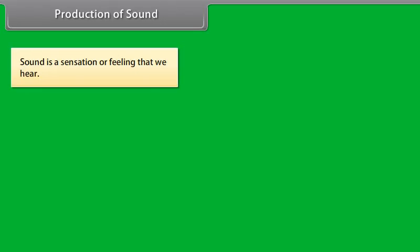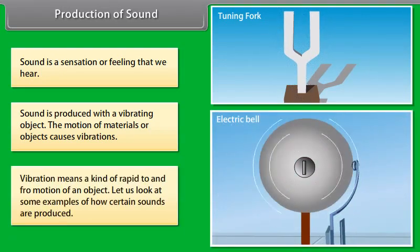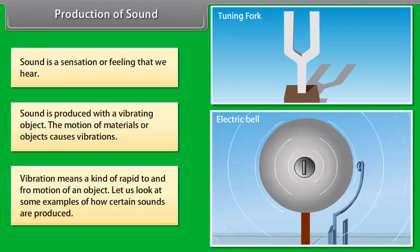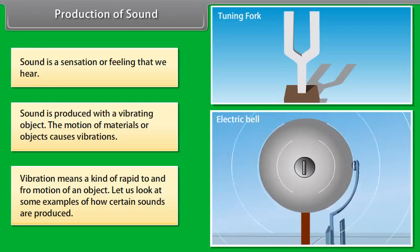Production of sound. Students, we know that sound is a sensation or a feeling that we hear. Sound is produced with a vibrating object. The motion of materials or objects causes vibrations. Vibration means a kind of rapid to and fro motion of an object.